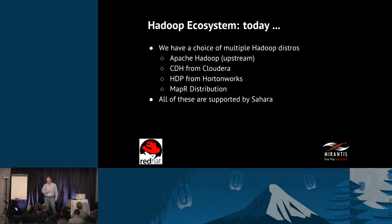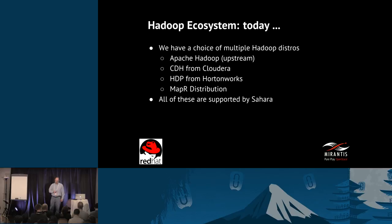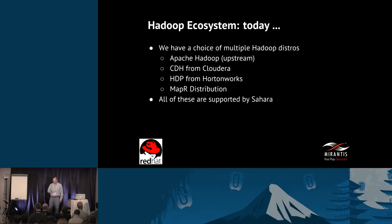Today we have a choice of multiple Hadoop distros. There is the Apache project itself — the upstream foundation for everything. We also have commercially supported distributions: CDH (Cloudera Distribution Including Hadoop) from Cloudera, Hortonworks Data Platform from Hortonworks, and the MapR distribution. All of these are supported by Sahara, so you can run vanilla Apache Hadoop or any of these other three.